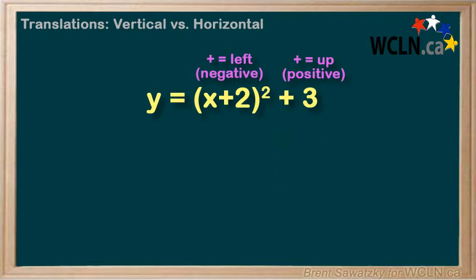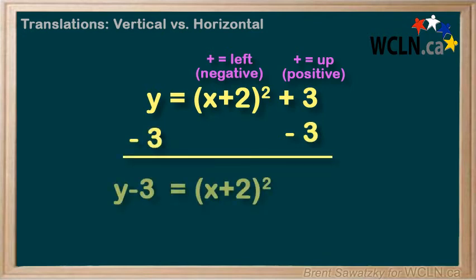So to better compare these two, maybe we'll move the vertical shift over to the left. And in this case, we're adding 3 to the right, and so we can subtract 3, and whatever we do to one side, we do to the other.